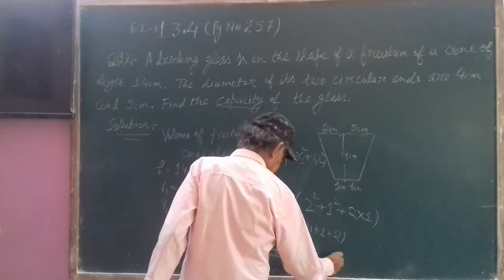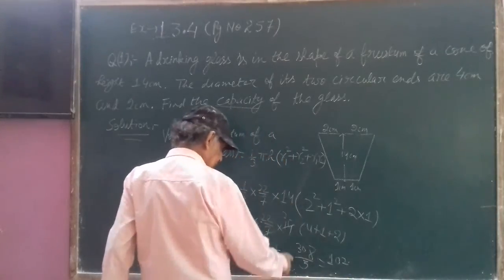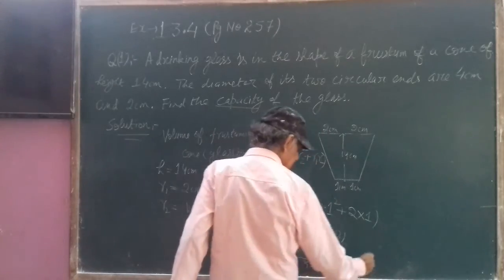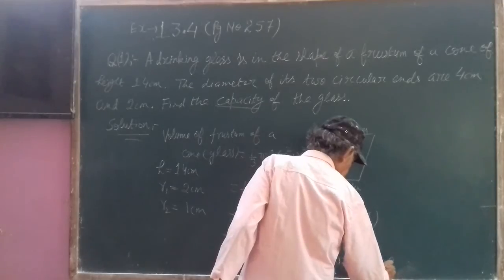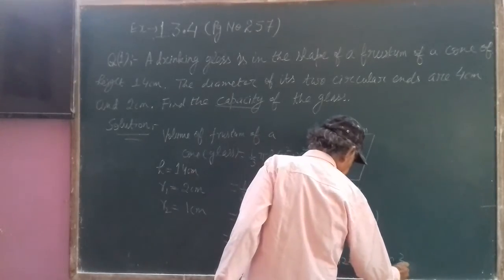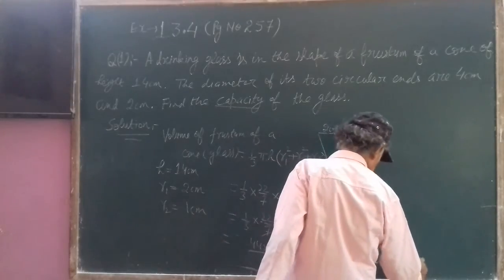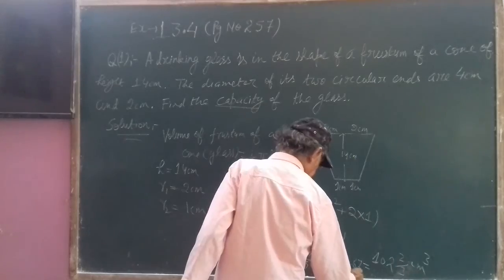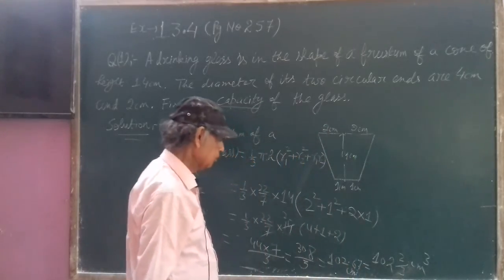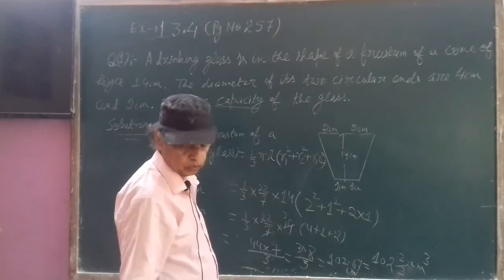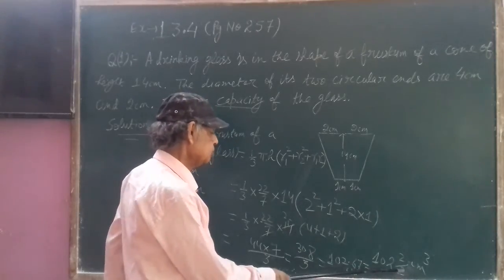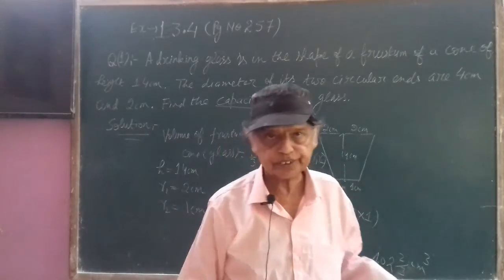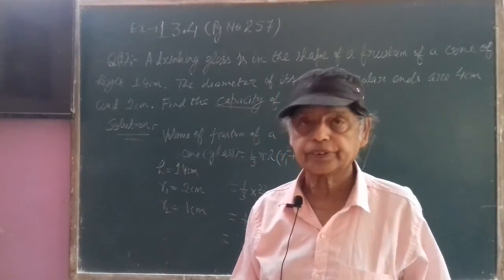The answer is 102.67 cm³, or in fraction form, 102 and 2/3 cm³. Either write 102.67 centimeter cube or 102 two-thirds centimeter cube — that is your answer.